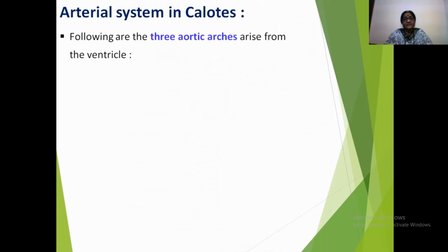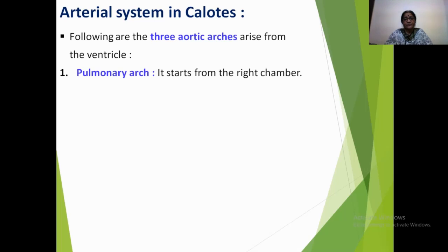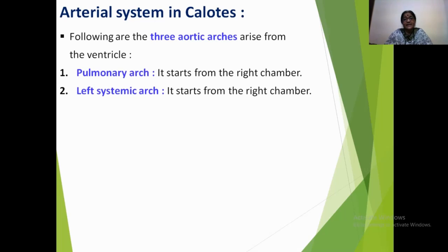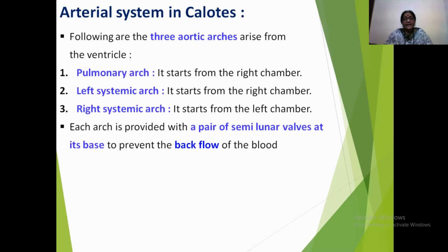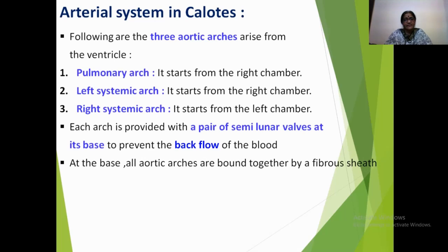The three aortic arches arise directly from the anterior dorsal border of the ventricle. The first arch, the pulmonary arch, starts from the right chamber of the ventricle, the cavum pulmonale. The left systemic arch also starts from the right chamber of the ventricle, while the right systemic arch starts from the left chamber, the cavum dorsale. Each arch is provided with a pair of semilunar valves at its base to prevent backflow of blood into the ventricle. At the base, all three arches are bound together by a fibrous sheath of connective tissue.